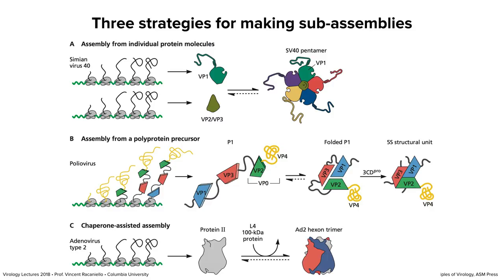Here are ways sub-assemblies are made in virus-infected cells. For SV40, individual VP1 proteins are made by translation, five VP1s form a pentamer, and a minor protein VP2/3 ends up in the center. That pentamer is a sub-assembly, because you need many of them to build the capsid. So individual proteins come first — the protomer, the single subunit — then pentamers form, and then the final virus particle.